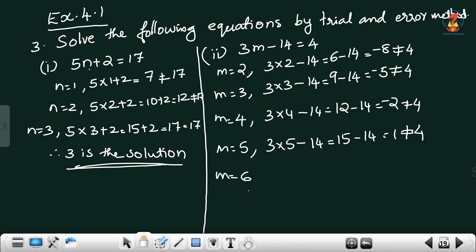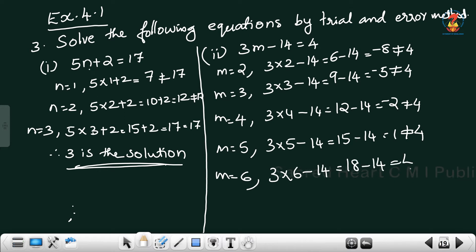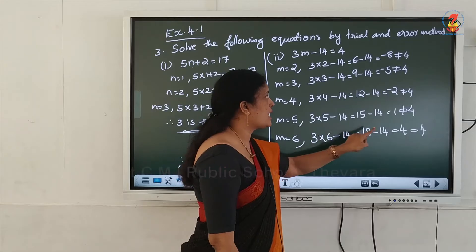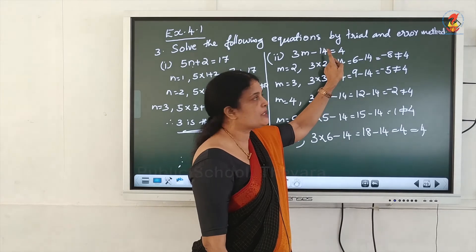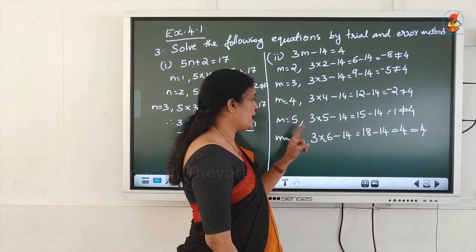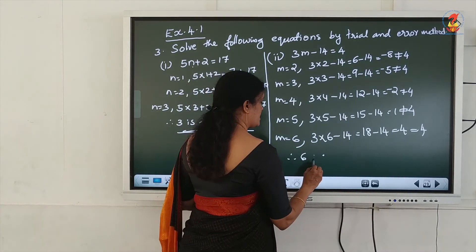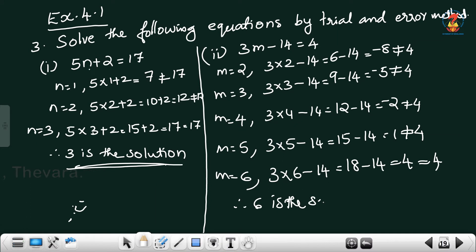For m = 6: 3×6 − 14 = 18 − 14 = 4, equal to RHS which is also 4. So LHS = RHS = 4. Therefore m = 6 is the solution of this equation. This is the trial and error method.